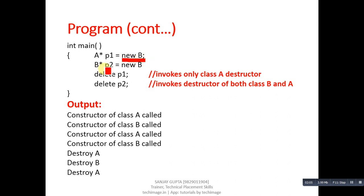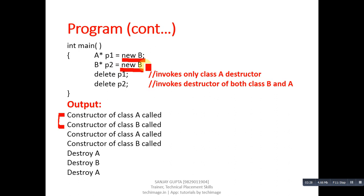The derived class pointer is also allocating memory for a derived class object. When a derived class object is created, the constructor of the derived class and the constructor of the base class will both be executed. You can see in the output these statements are printed because of both object creations.